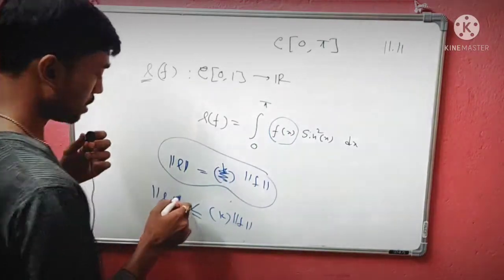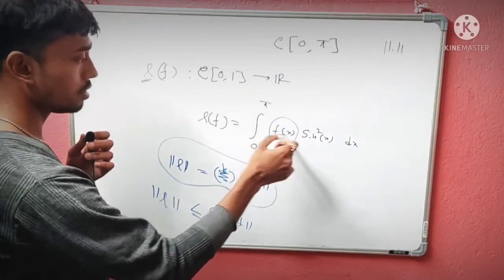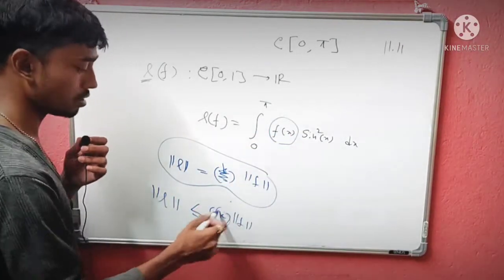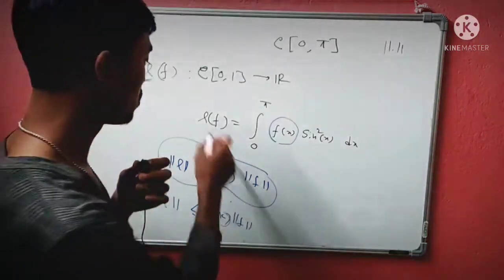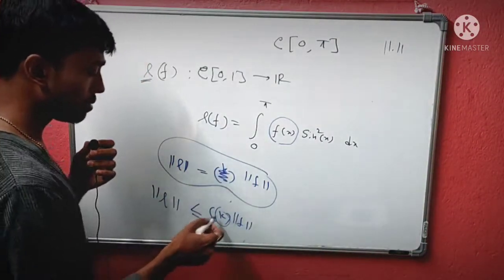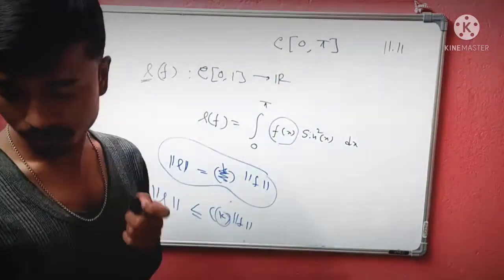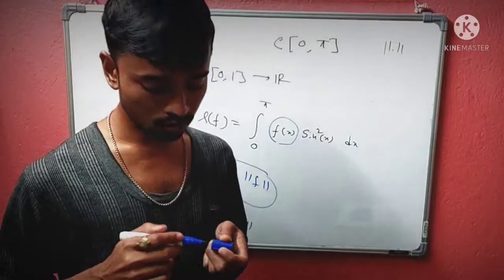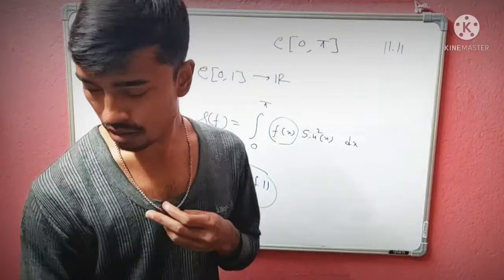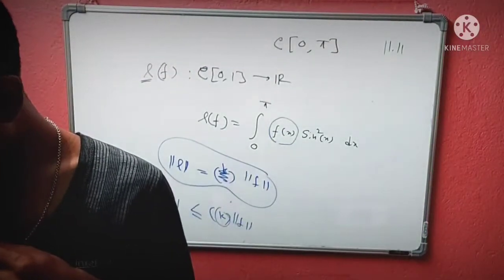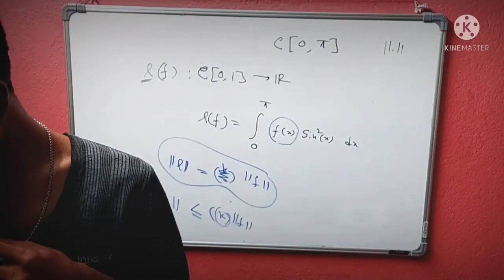Then we can claim that K is the norm. We basically apply that formula here. Let's dig deep and see what's going to happen.